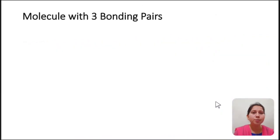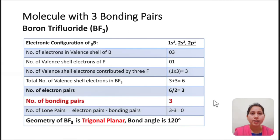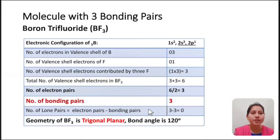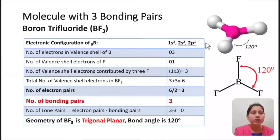Next: molecule with three bonding pairs. Example: boron trifluoride (BF₃). Central atom is boron, with number of valence electrons = 3. Electron contribution by three fluorine atoms = 3. Total valence shell electrons in BF₃ = 3 + 3 = 6. Number of electron pairs = 6 ÷ 2 = 3. All three are bonding pairs, so the geometry of BF₃ is trigonal planar with bond angle 120°.